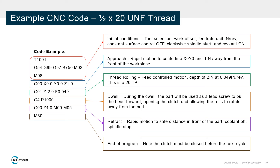The next line is the rapid approach move, which brings the tool to the center line and one inch from the face of the workpiece. Then the thread rolling line, where the tool is fed two percent slower than the pitch, to a depth of two inches. Once the cycle depth is reached, a one-second dwell is used to open the rolling head. Once the head is open, the tool is retracted, the spindle is stopped, and the program ends.